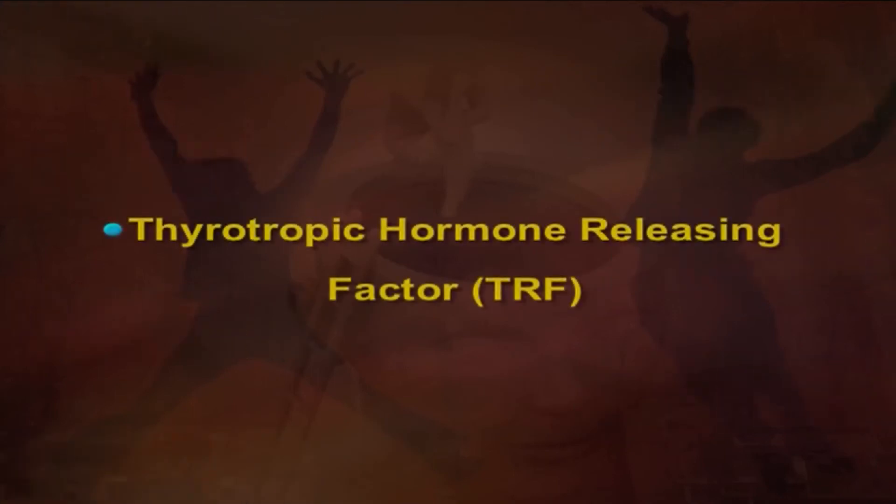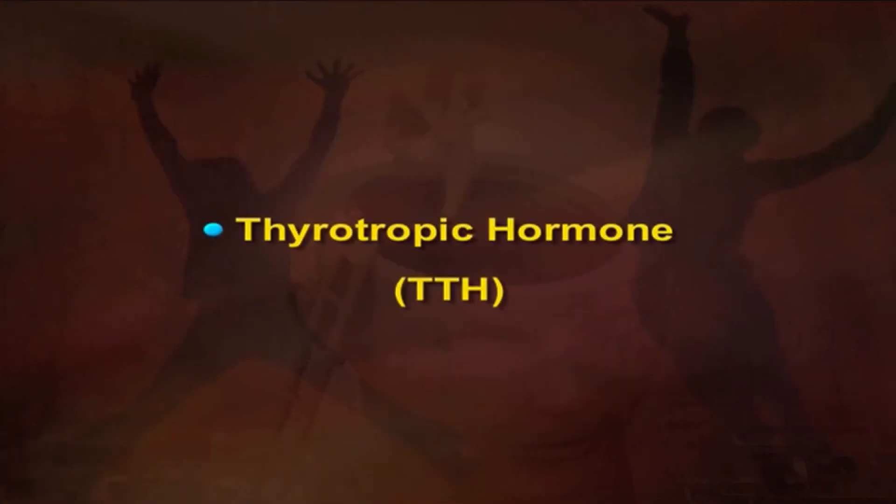The other hormone released by the hypothalamus is the thyrotrophic hormone releasing factor, or TRF. Under the influence of TRF secreted by the hypothalamus, the anterior pituitary gland secretes thyrotrophic hormone, or TTH, into the bloodstream. The main function of TTH is to stimulate the thyroid gland, leading to a number of physiological changes such as an increase in the basal metabolic rate, a decrease in gastrointestinal activity, an increase in the depth of respiration, an increase in heart rate and blood pressure, and an increase in anxiety which serves to reduce feelings of fatigue.